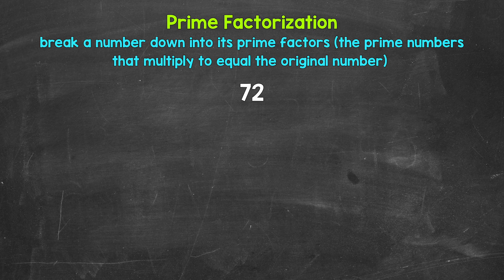So we are decomposing a number, breaking a number down to only prime numbers. So as far as 72, we need to start breaking this down by thinking of two factors, two numbers that multiply to give us 72.